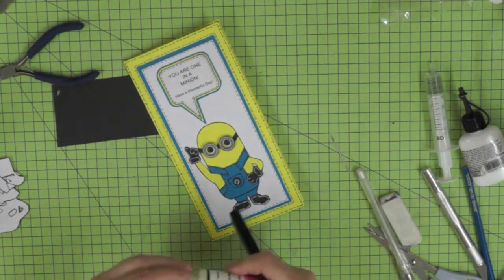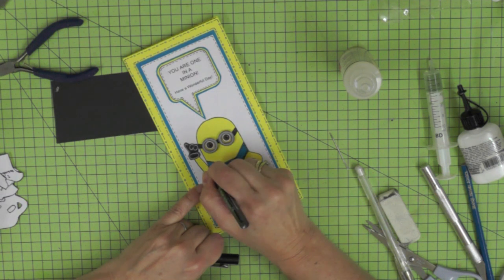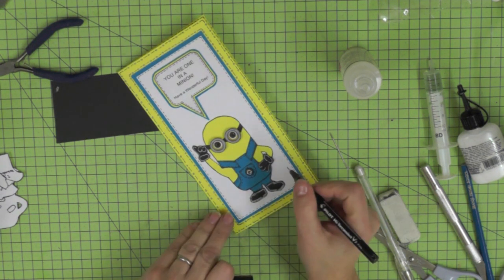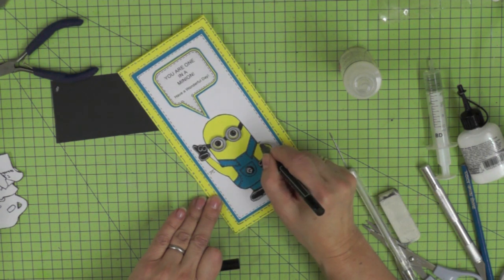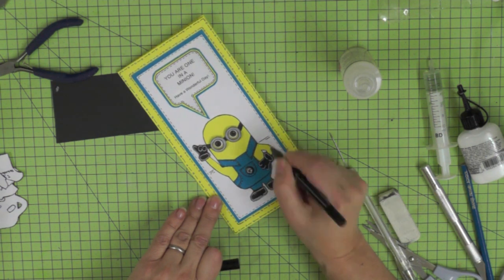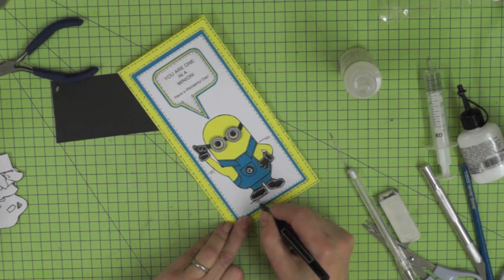So now we just need to add a little bit of detail to finish off our minion. I'm just going to give him somewhere to stand so I'm just going to mark where the floor is behind him on the card—just a couple of lines to indicate that he's actually standing on something and a little bit of shadow underneath his feet.